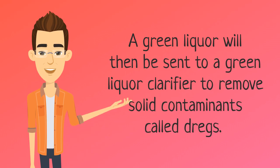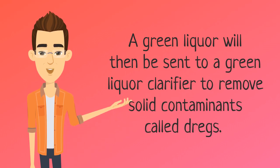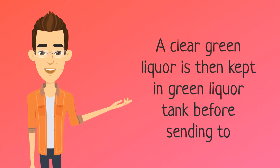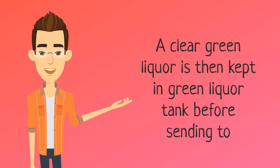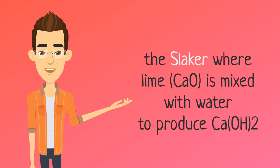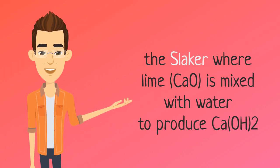Green liquor is then sent to a green liquor clarifier to remove solid contaminants called dregs. The clear green liquor is then kept in a green liquor tank before being sent to the slaker, where lime or calcium oxide is mixed with water to produce calcium hydroxide.